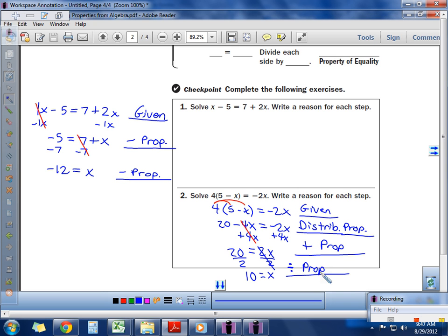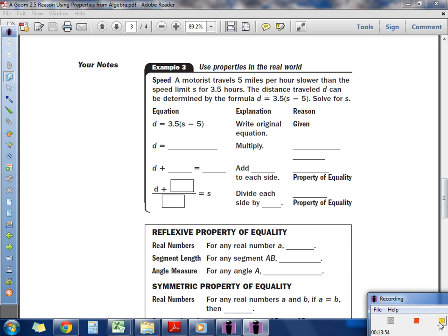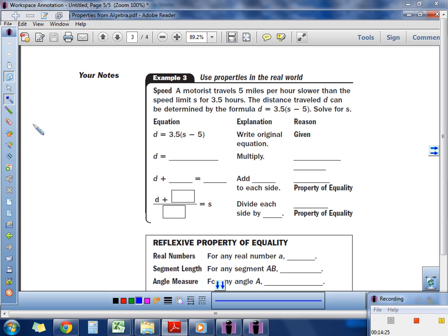Any questions real quick? Any comments? Good. Example 3 gets a little more involved. It says a motor travels 5 miles per hour slower than the speed limit S for 3 1/2 hours. The distance traveled, which is D, can be determined by the formula D equals 3.5 parentheses S minus 5. Solve for S. So what we need to do right here is we need to substitute some values or actually just figure out what formula to use. Here's our formula right here. We're solving for S. So let's write this formula out. They wrote it right there. Once again, I like writing it out to the side so I have more room. So D equals 3.5 S minus 5. What's my reason for writing that? Given. Good job.